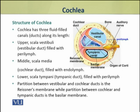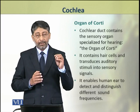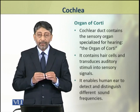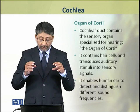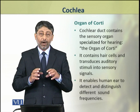The partition between the vestibular duct and the cochlear duct is called Reissner's membrane, while the partition between the cochlear and tympanic ducts is the basilar membrane. The cochlear duct contains the sensory organ which is specialized for hearing and is called the organ of Corti.